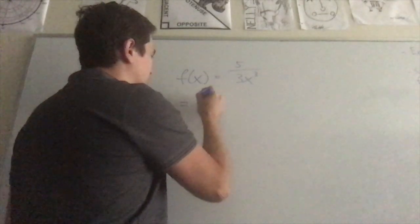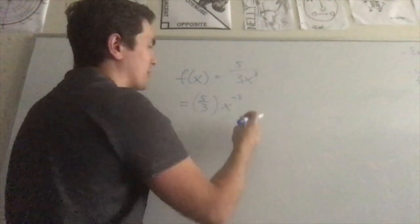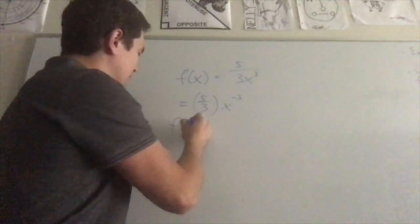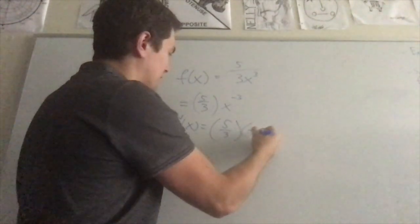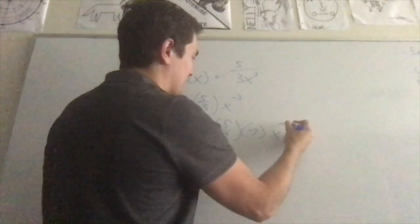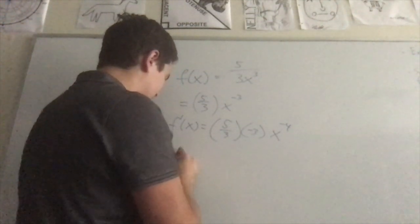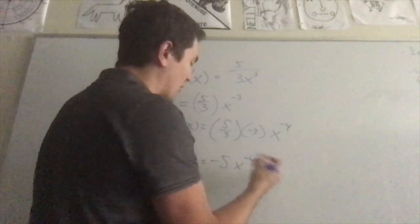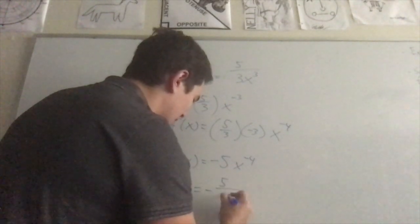Now we can use the power rule. The derivative is 5/3 times negative 3, then x to the negative 3 minus 1 power, which is x to the negative 4. The 3s cancel out, leaving negative 5 x to the negative 4th power. We can rewrite that as negative 5 over x to the 4th power.